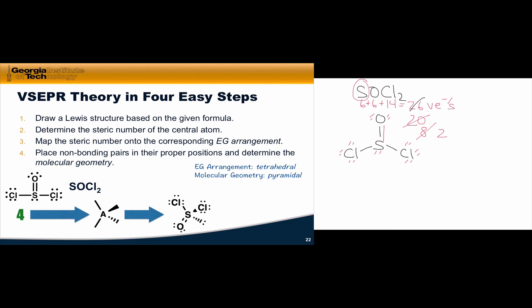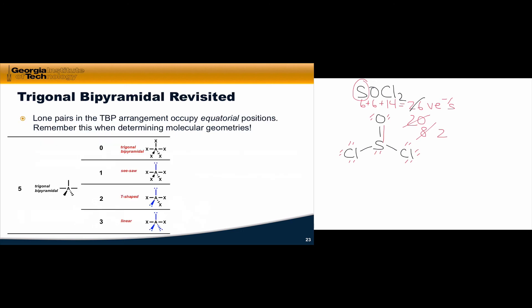And then, step four is to place non-bonding lone pairs in their appropriate positions to determine the molecular geometry. This is trickiest for the trigonal bipyramidal geometry, which has inequivalent positions where we could put lone pairs. Remember, along these lines, that lone pairs in the trigonal bipyramidal arrangement occupy equatorial positions. That's important to remember when you're determining the molecular geometry of a structure with the trigonal bipyramidal arrangement.